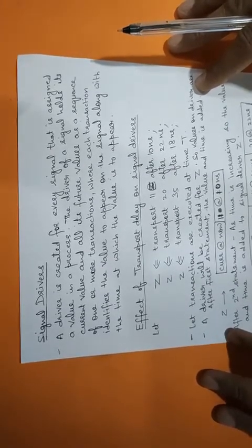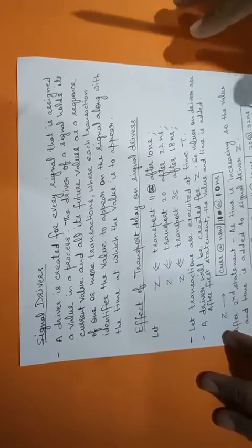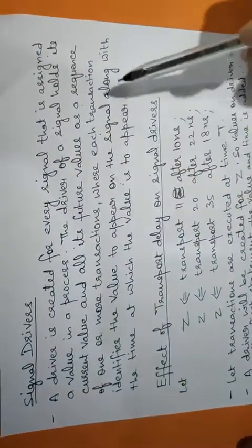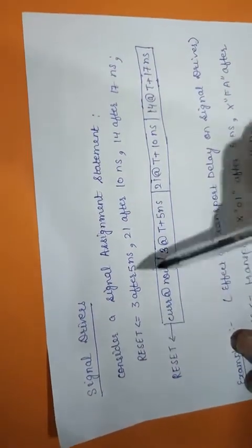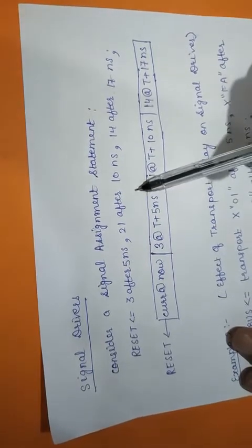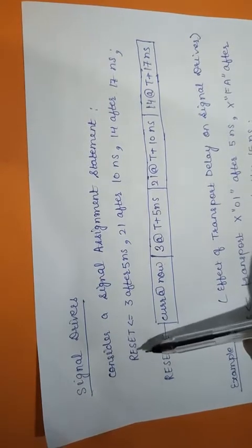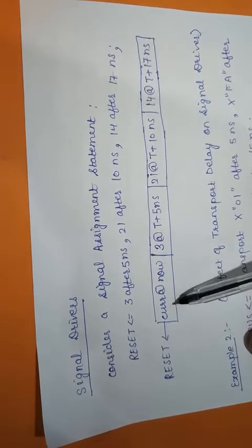It will be consisting of the value of A — like we have done in the previous lecture about the type of delays, we have taken transport A after 5 nanoseconds — so the value of A and at what time we are getting it. The signal driver will hold the correct value and the time at which the value is appearing. For this I have taken an example: reset is the output and it is 3 after 5 nanoseconds, 21 after 10 nanoseconds, and 14 after 17 nanoseconds. A signal driver will be created for this output, reset, and its initial value will be the current value at now.